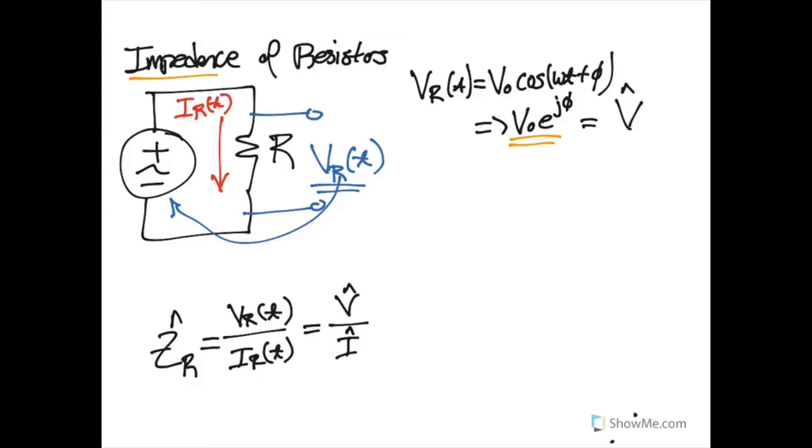Now, to complete our representation of impedance, we also need to know the current flowing through the resistor. But thankfully, because we have V equals IR, we know that whatever the voltage is across that resistor, if we divide it by the resistance, then we've got a current function.